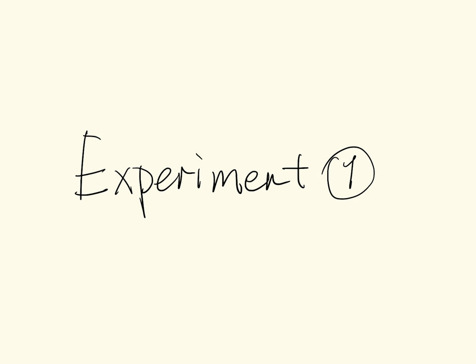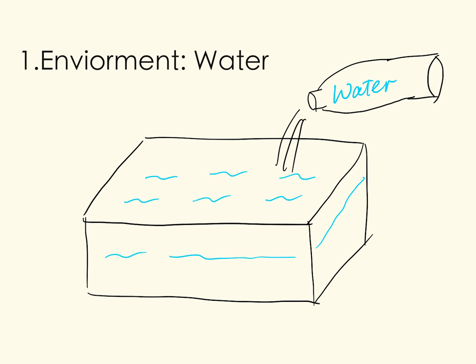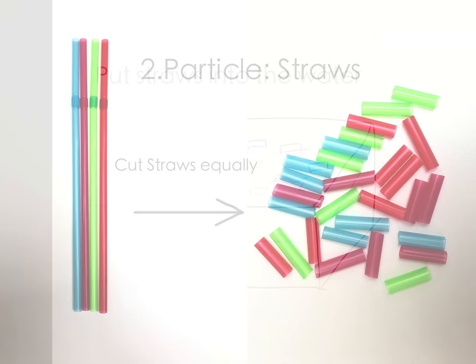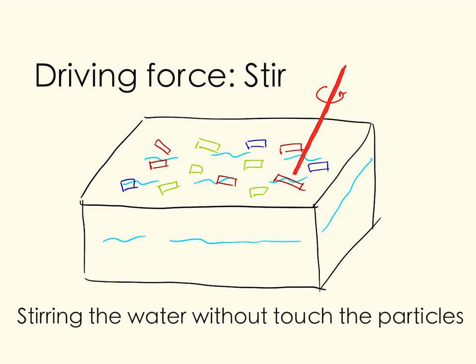Here comes experiment one. For our self-assembling system, we set the environment to be water, and the particles are cut-up straws which have equal lengths. Just put the straws into the water and stir without touching the particles, to ensure an external force has no influence on the binding force. Let us see what actually happens.